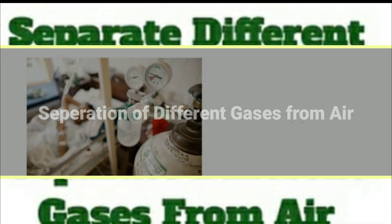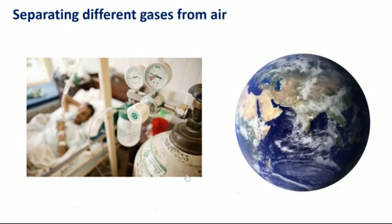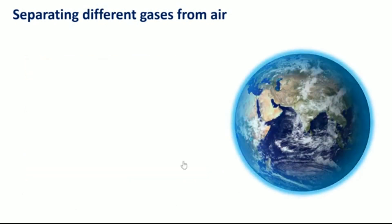Before we discuss how different gases present in air can be separated, let us talk about the oxygen cylinder which we generally notice in hospitals. This cylinder, which has 'oxygen' written on it, has been extracted from air. That is, this oxygen is separated from the other gases like nitrogen, argon, carbon dioxide, helium, neon, krypton, xenon, and so on.